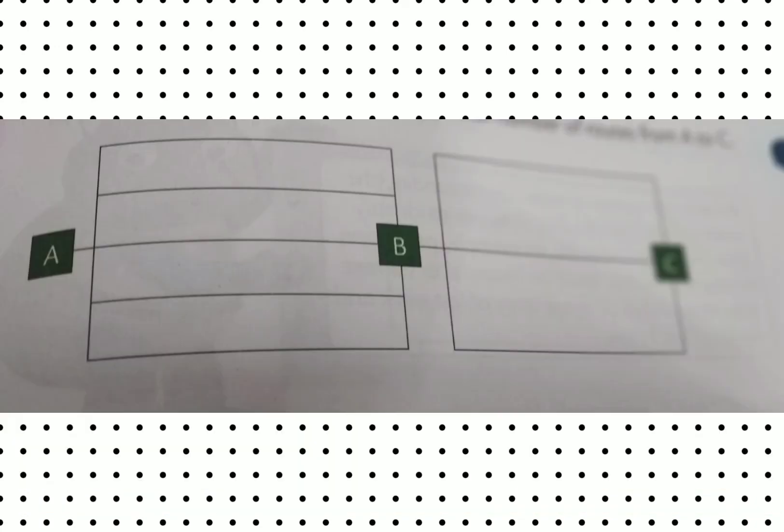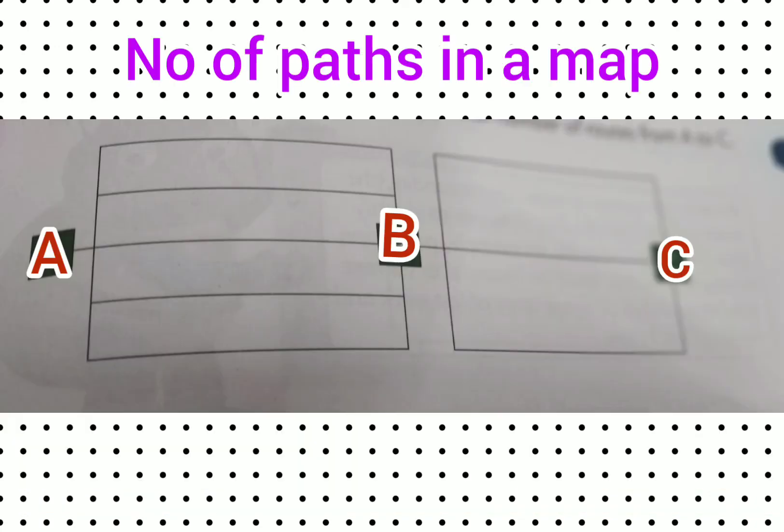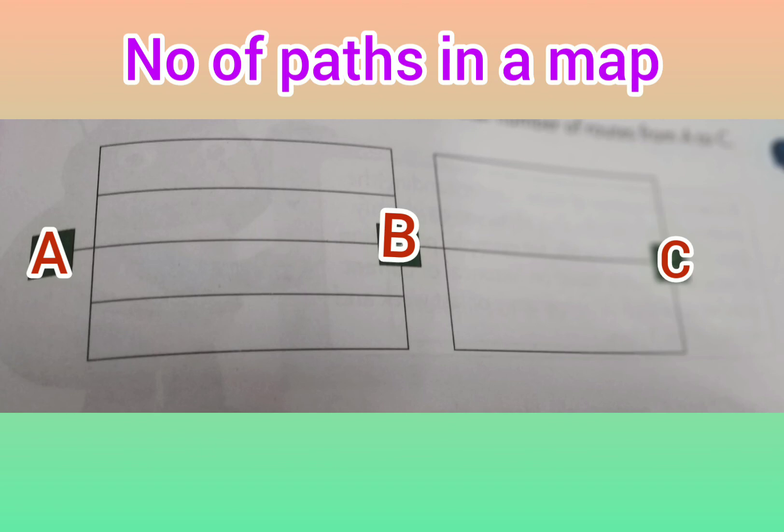Now consider another example. As you can see the picture, this particular picture shows routes. These lines indicate routes and A, B, C are the points. We have to start from point A and reach to the point C. As you can observe in the picture, from point A to point B there are different 5 paths. And from point B to point C there are 3 paths.